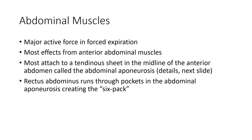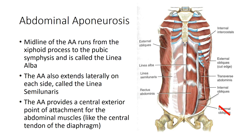The abdominal muscles are a major active force in forced expiration, coming from primarily the anterior part of the abdomen. Most abdominal muscles have an attachment to a tendinous sheet in the midline of the anterior abdomen called the abdominal aponeurosis. The rectus abdominis muscle runs through pockets in the abdominal aponeurosis, and this is what gives the six-pack shape when you have extremely low body fat. The midline of the abdominal aponeurosis runs from the xiphoid process at the base of the sternum to the pubic symphysis — this is called the linea alba. The abdominal aponeurosis also extends laterally on each side to a line called the linea semilunaris, providing a central exterior point of attachment for the abdominal muscles, kind of like the central tendon in the middle of the diaphragm.